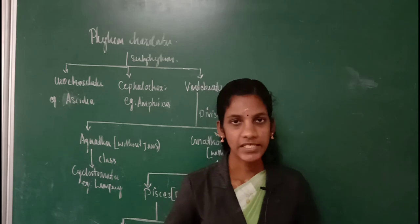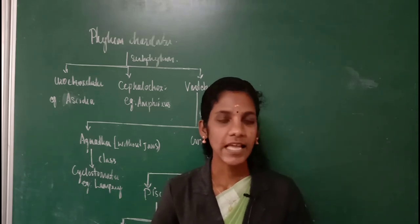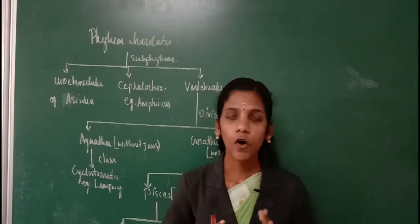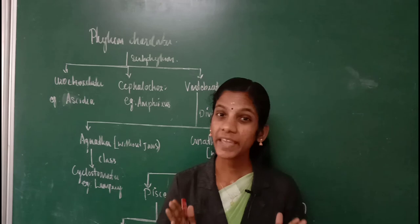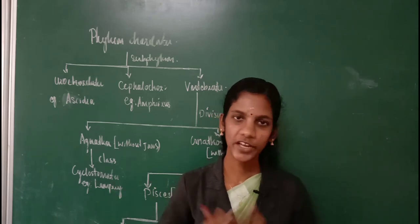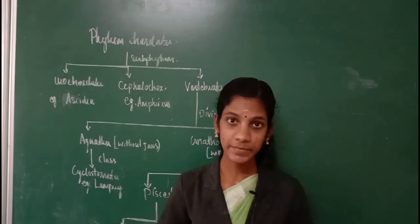Fishes will always have lateral appendages in the form of paired fins, but in the case of Tetrapoda, their lateral appendages are modified in the form of limbs.